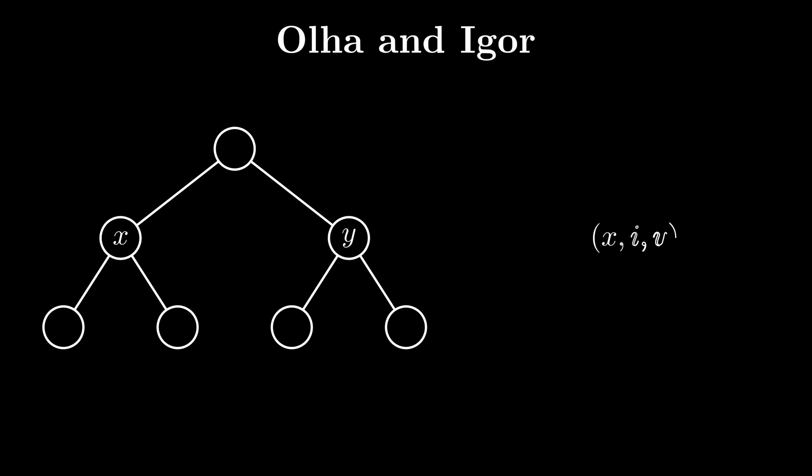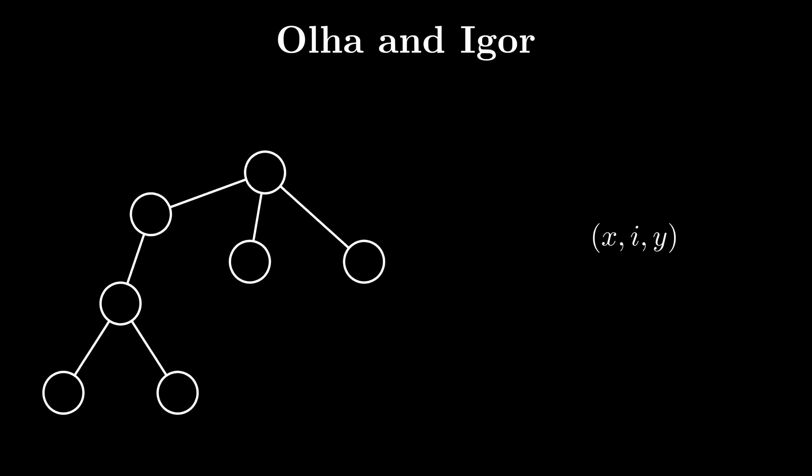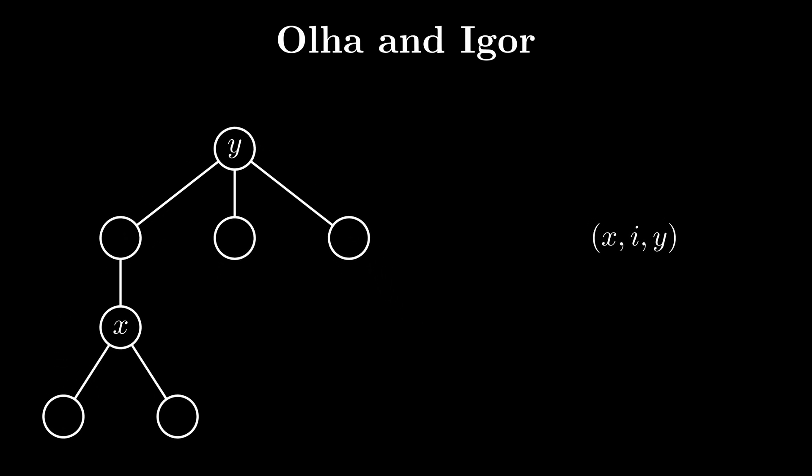We can use a further n minus 2 queries of the form x, i, y, which means that we root the tree at y and find the LCA of x and i. In the original tree, the LCA of all nodes in the subtree of x and x will result in the LCA being x.